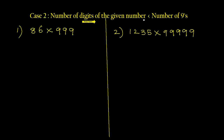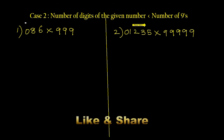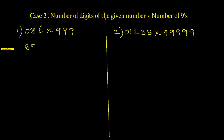Case two: when number of digits of the given number is less than the number of nines. We follow the same method, but we fill the leading digits with zeros so that both have the same number of digits. Write a zero here so that we have three digits and three nines. Same manner, fill a zero here to get five digits and five nines. Reduce 1 from 086, giving 085. Now all from 9, last from 10: 9 minus 0 is 9, 9 minus 8 is 1, 10 minus 6 is 4. That's the final answer.